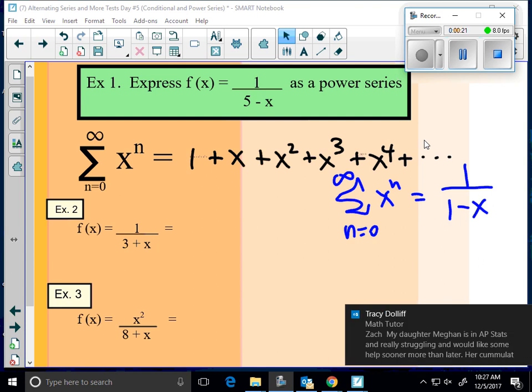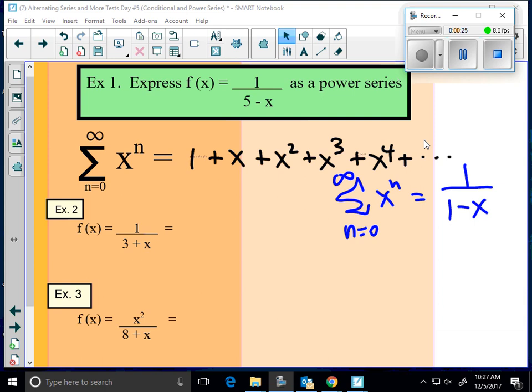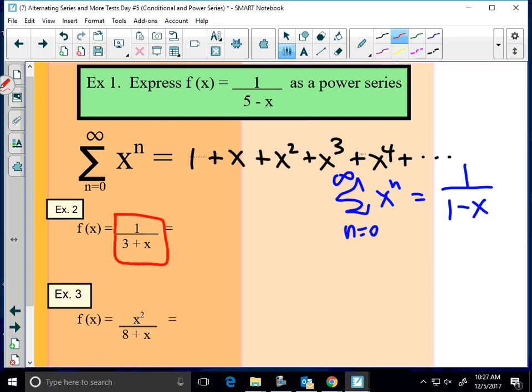So in order to get this function f(x) right here to look like one over one minus something, what do we need to take out? We need to take out of that first term in the denominator a three, right?